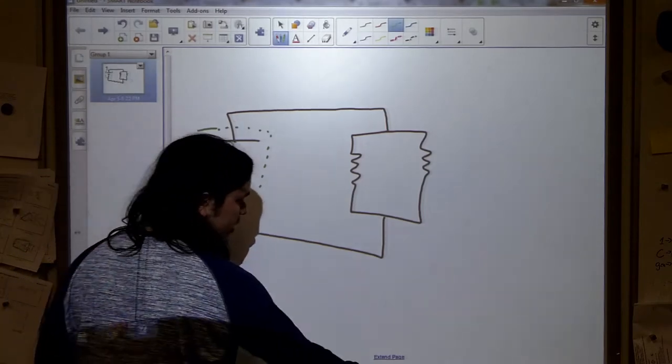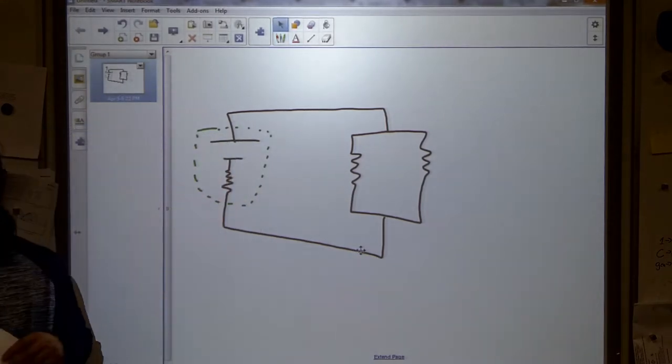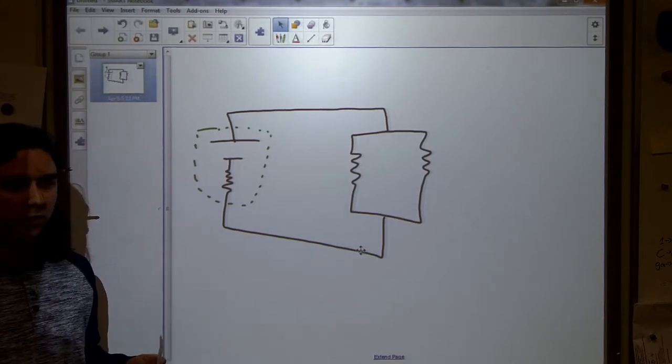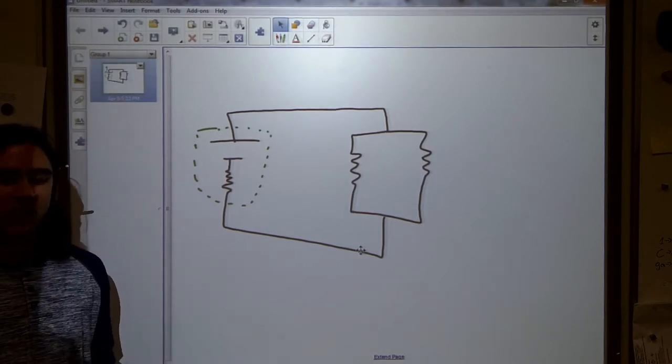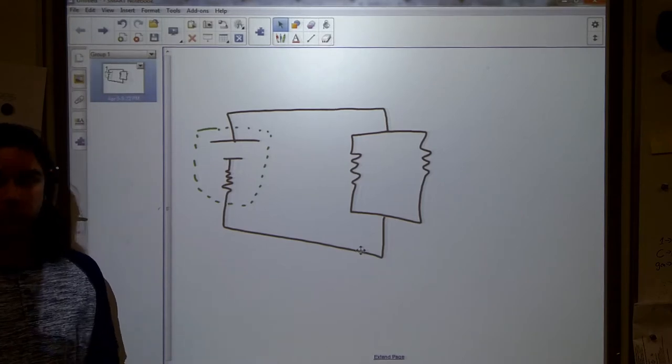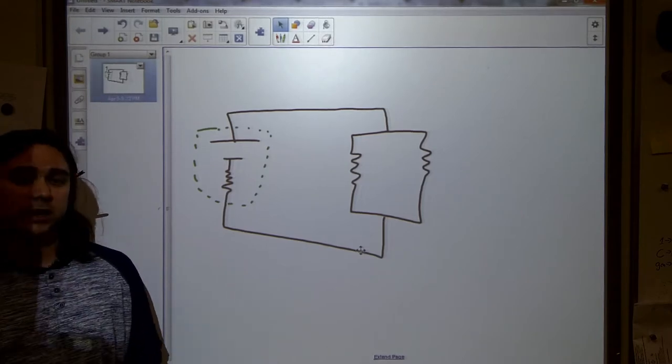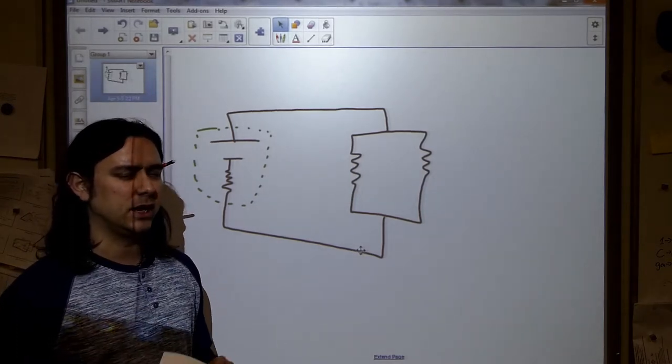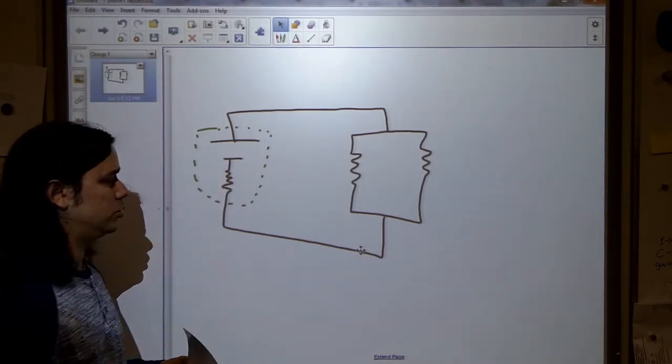In real life, batteries don't let charge through them perfectly. It's not just an open door for charge. It's actually a little difficult to get charges to move through the battery. That's one of the reasons why in the labs that we did, when you hook them up to different things, their numbers will change slightly. And a lot of that is actually because of the internal resistance.